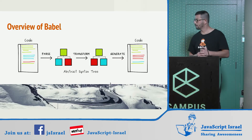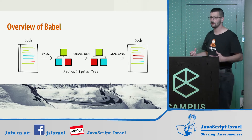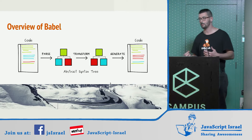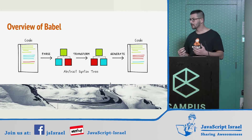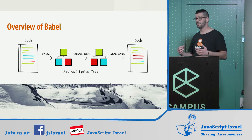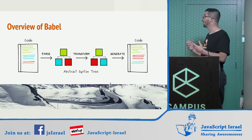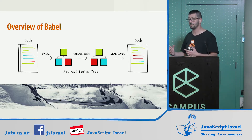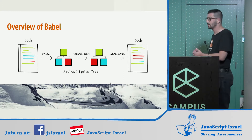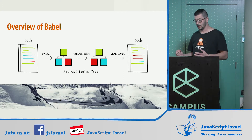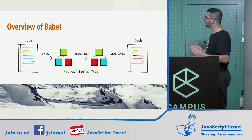Before we get into a hands-on demonstration of how to create a Babel plugin from scratch, let us discuss the process of compiling in general and Babel in particular. Because Babel is a compiler, the process you are about to see is common to all compilers. There are three major tools involved in the compilation process.